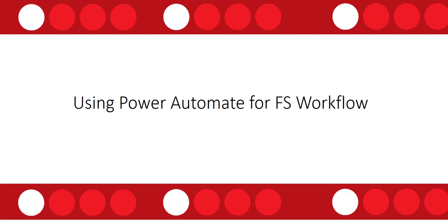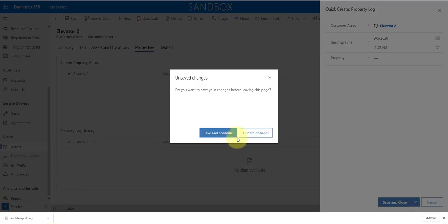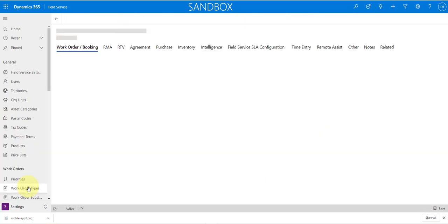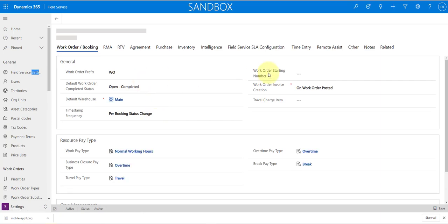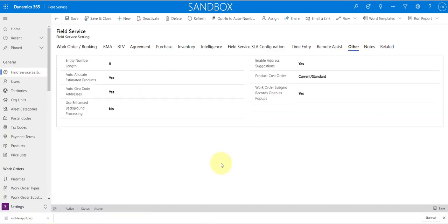This next feature isn't easy to demo, but what it means is that all the workflows we previously had for Field Service — for example to ensure your agreement data is being processed — will now be moved to Power Automate. This means those workflows won't be consuming resources in your Dynamics 365 instance. This is a setting you can enable: go to Field Service Settings, click on Other, and this is where you can set the field to use Enhanced Background Processing.